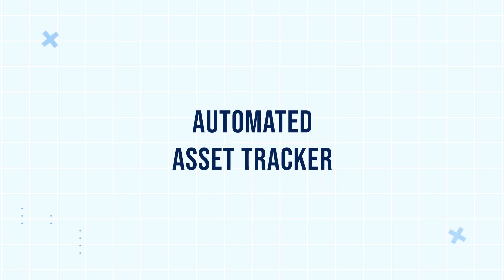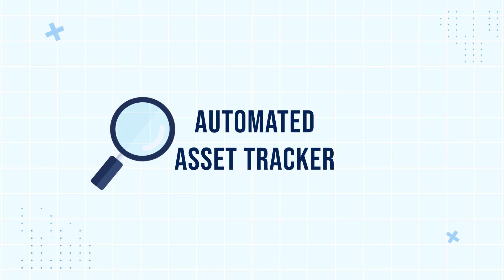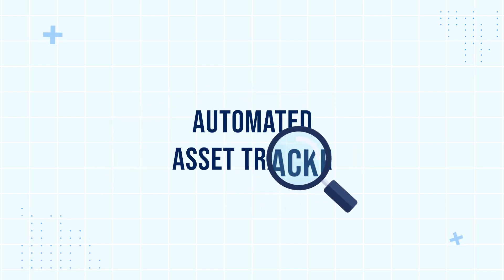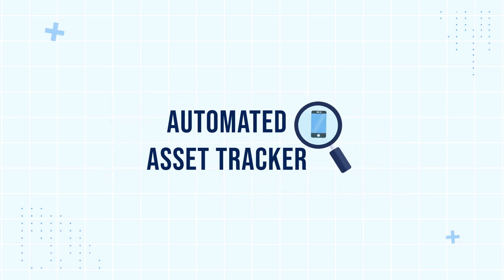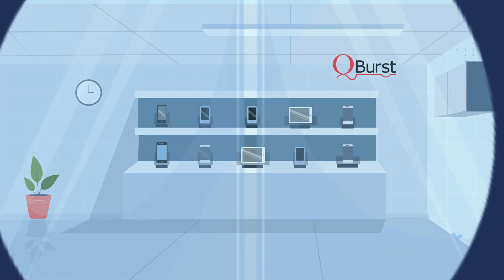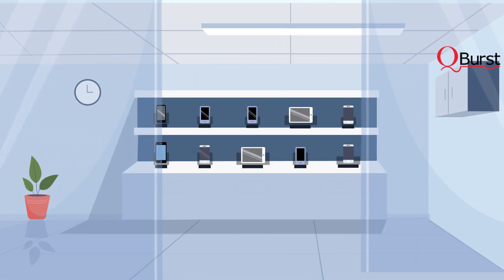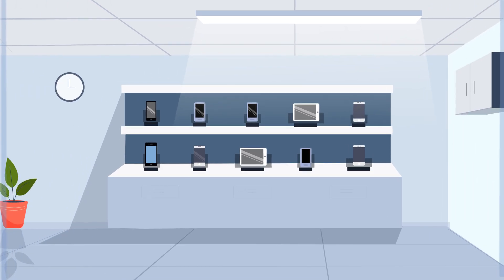Today, I'm going to introduce you to an innovative application that is inspired by the Amazon Go platform. It's called the Automated Asset Tracker. It is an application that utilizes computer vision to track assets. At QBurst, we use this application to track assets in our device lab.